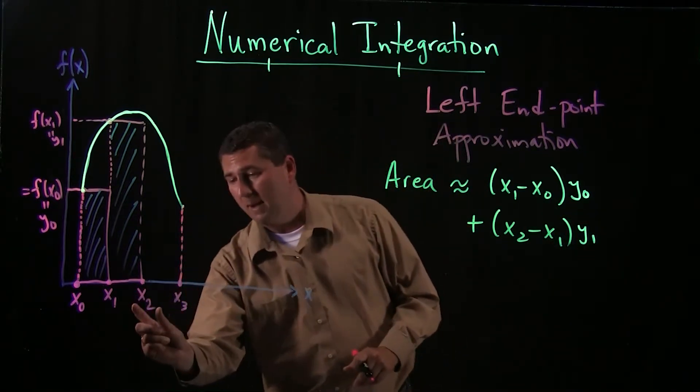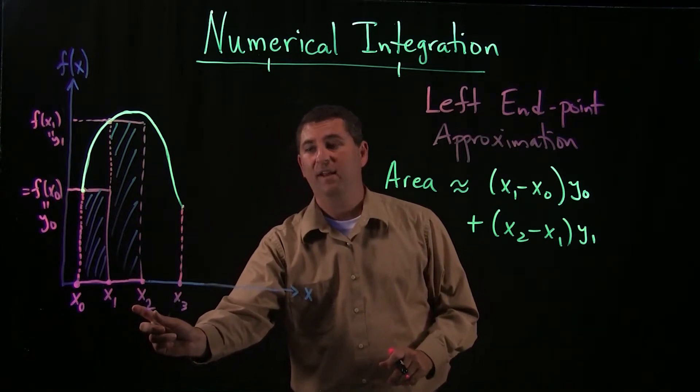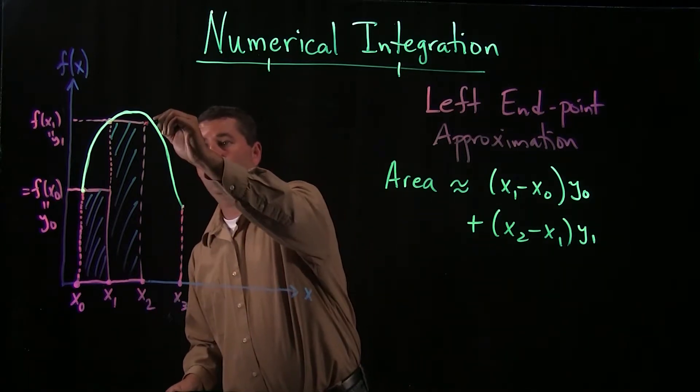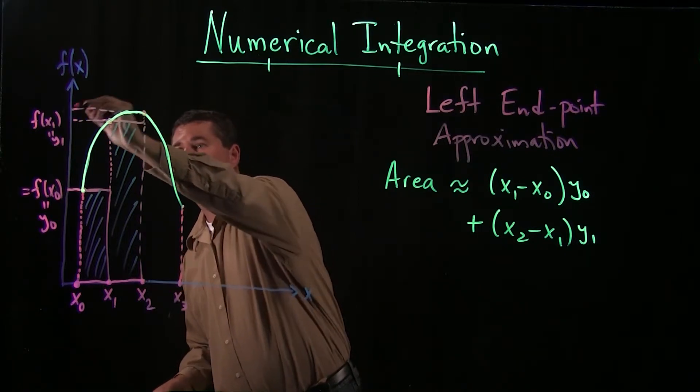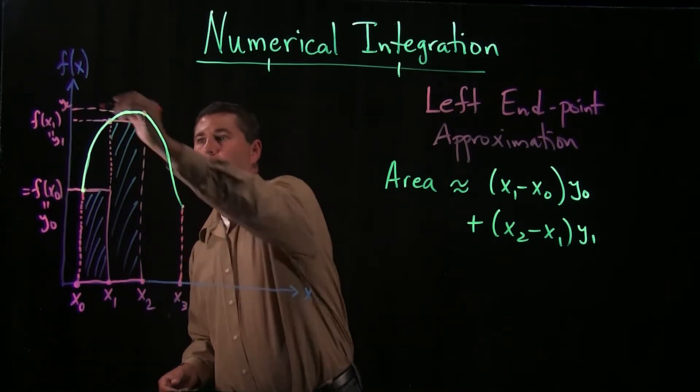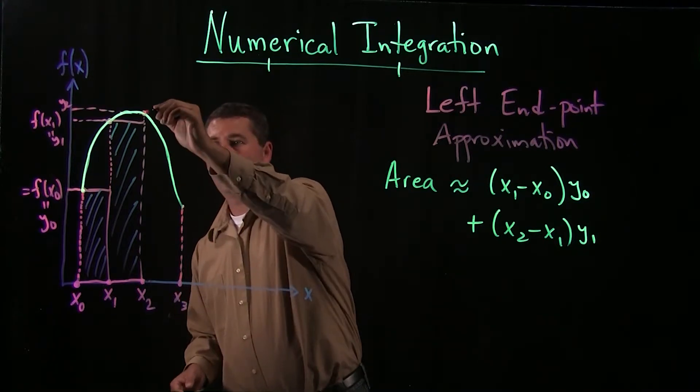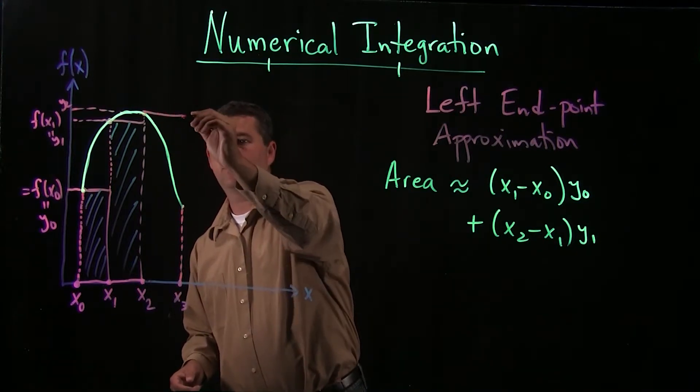One more rectangle to go. I move over, and now my left endpoint is at x2. So I come over here, and I say, how high is it? Ah, it's up there. So that's my y2.